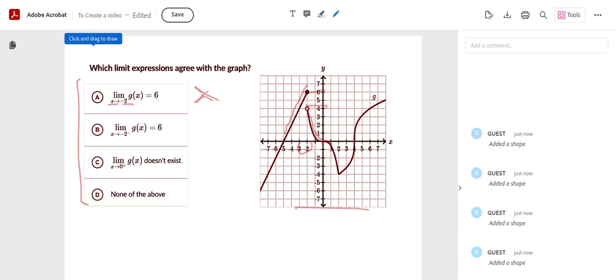Now we're going to look at answer choice B. Same thing, x approaches negative 2. But the difference is from the left. So we already looked at it from the left. We said that when you're looking at it from the left, you see the y-axis, it's 6.